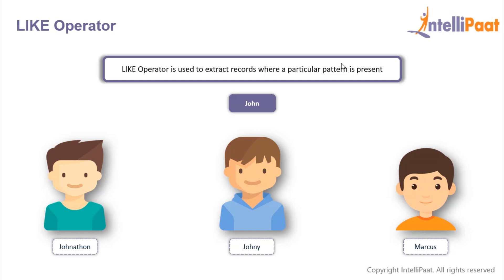So if you have records of three people in our table with the names Jonathan, Johnny, and Marcus, then with the help of the LIKE operator we can extract records where the names are Jonathan and Johnny, since they have the required pattern present in them.